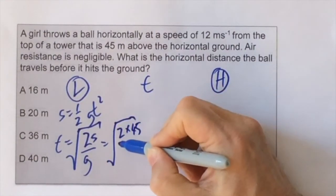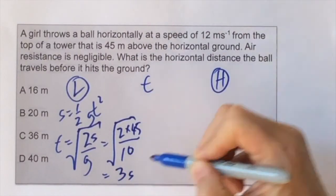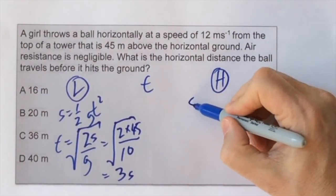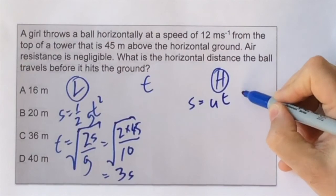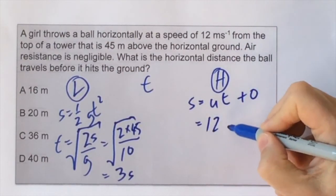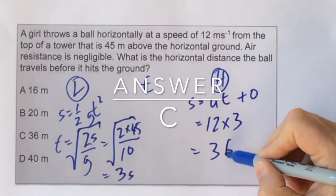We now substitute that time, three seconds, into the horizontal motion, where we know there is no acceleration horizontally, so the second term is zero. And when we substitute that in, travelling at 12 meters per second for three seconds, we find that the distance travelled is 36 meters.